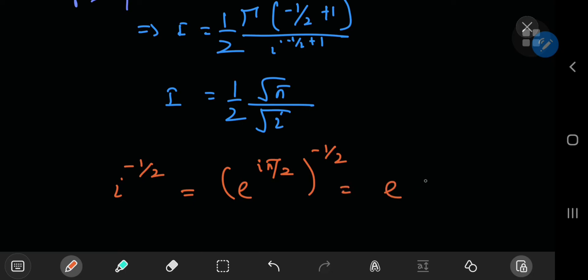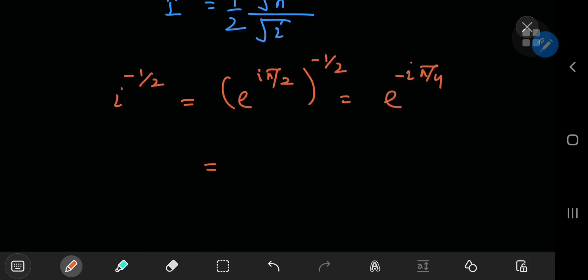So anyway, you have e^(-iπ/4). And we can once again use Euler's formula here.